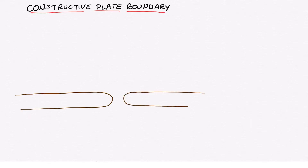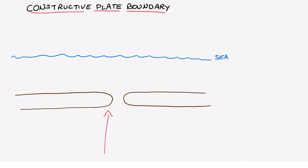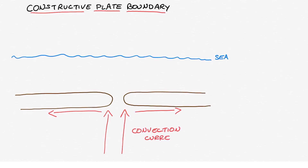Constructive plate boundaries are a type of divergent plate boundary. What occurs is the convection currents rise up, typically speaking from a hotspot deep inside the Earth's mantle, and as they rise up and hit the crust, they get pushed left and right. The friction generated between the moving convection currents and the plates will drag the plates in opposite directions — they will move apart.